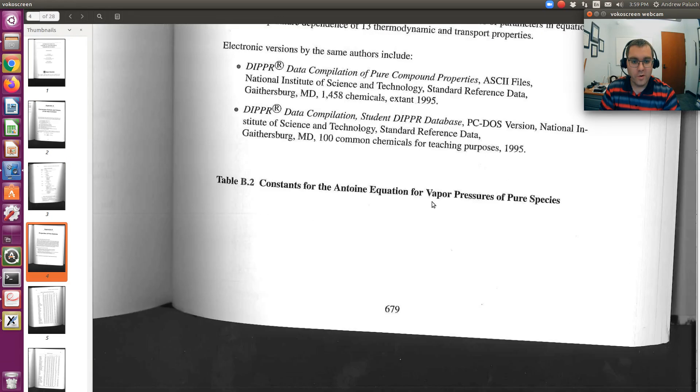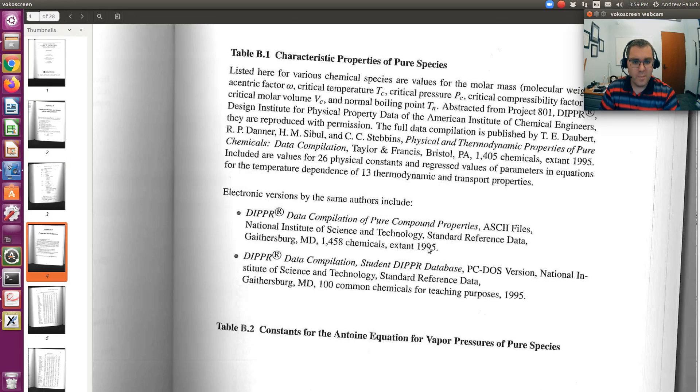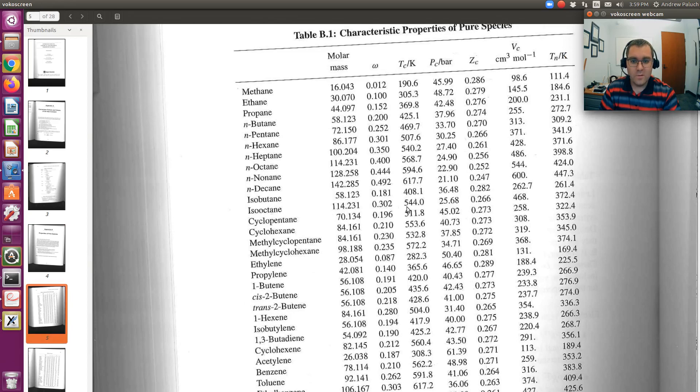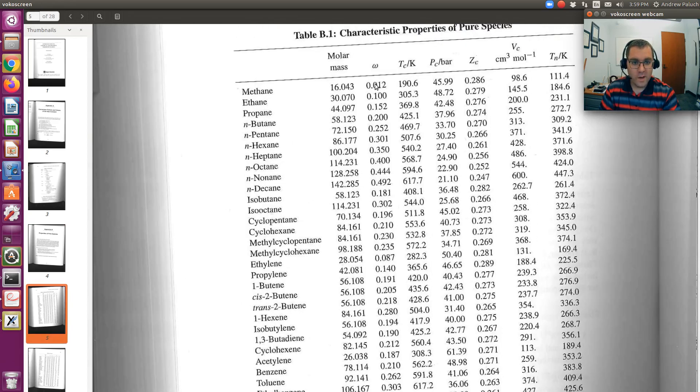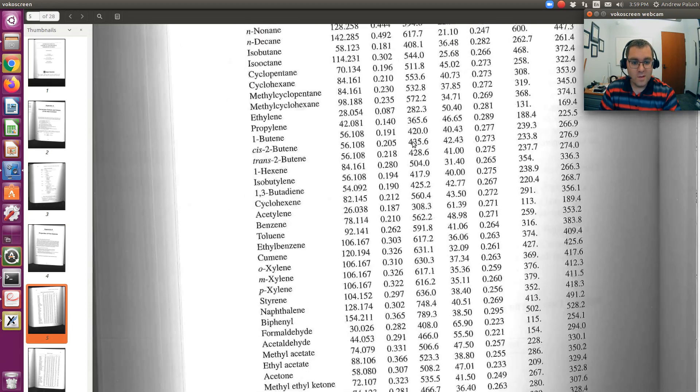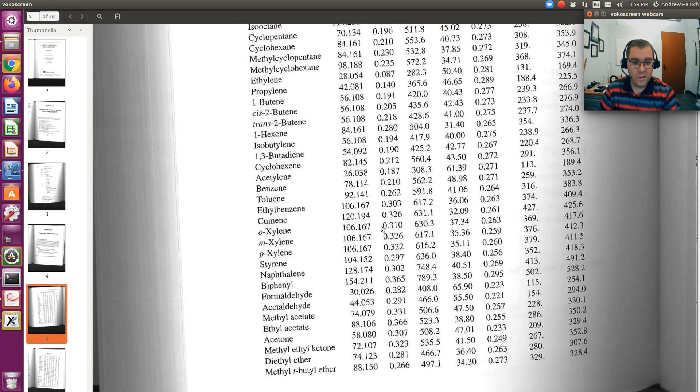If you wanted to pull critical properties, they should be here in appendix B. I could go find O-xylene. O-xylene is here. And then find omega, TC, and PC. So O-xylene, here would be omega, TC, and PC. That's the critical temperature in Kelvin.